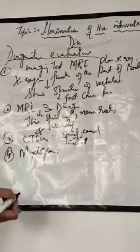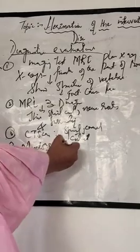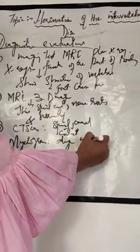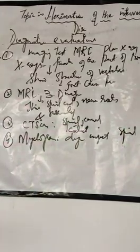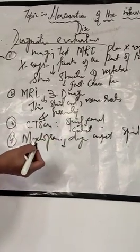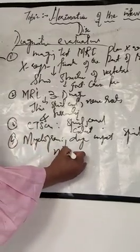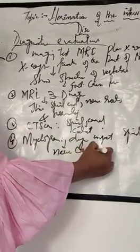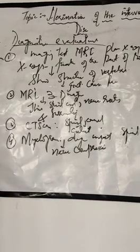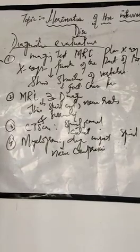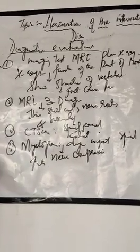The fourth test is called a myelogram. A myelogram is an X-ray of the spinal canal. A contrast material is injected into the spinal canal or spinal cord. This test helps identify nerve compression, and it can also be used for back pain.